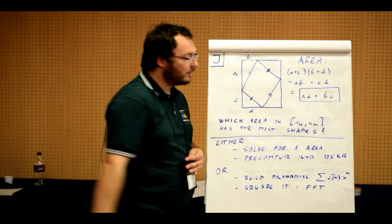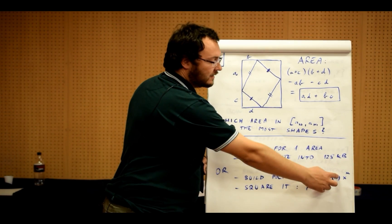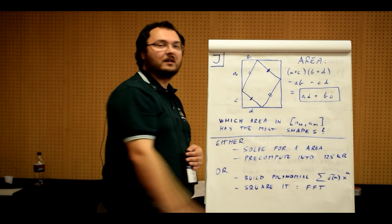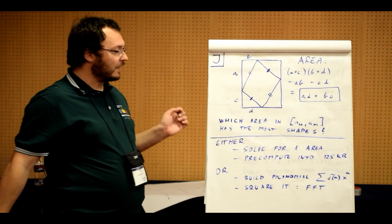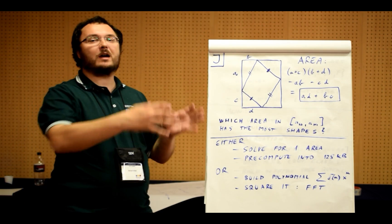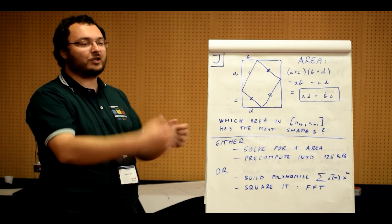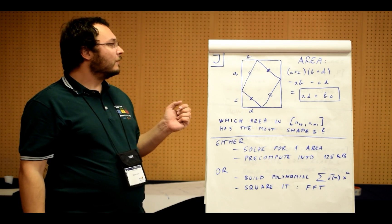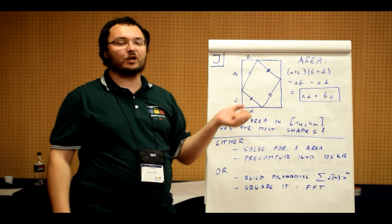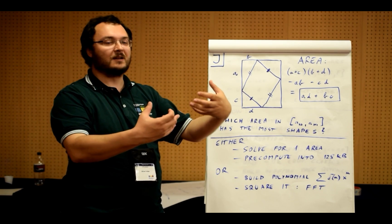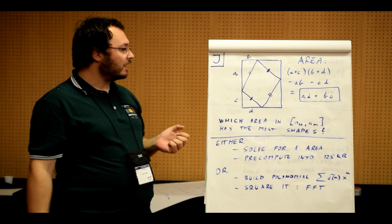And we can formally write it down as such a polynomial: the number of divisors of n times x to the n, and sum over all interesting values of n. And now if you take the square of this polynomial, the coefficients of the result will actually correspond to the convolution, to the thing that you take two different numbers and you combine those counts together.